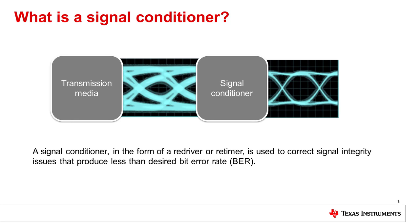Because of the unbounded aspect of random jitter, it is not possible to eliminate all errors caused from jitter, but it is possible to achieve a targeted bit error rate, or BER. A signal conditioner, like a re-driver or re-timer, can help correct jitter issues to produce a targeted BER.